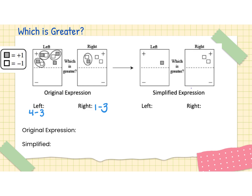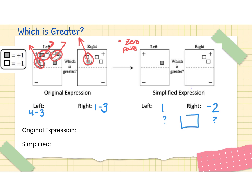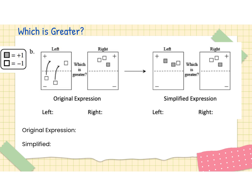Once I have completed removing the zero pairs, I want to figure out what is left. What is left on the left-hand side is a plus one tile, and what is left on the right-hand side are two negative tiles. So what is greater — negative one or negative two? Obviously, negative one would be greater.